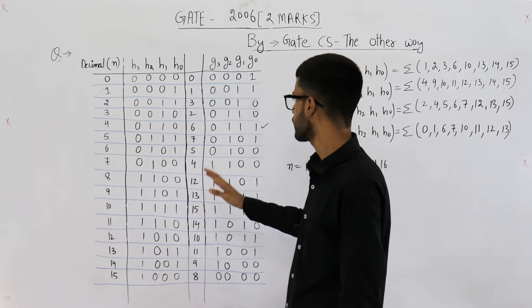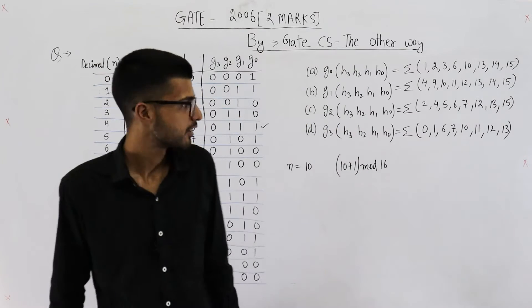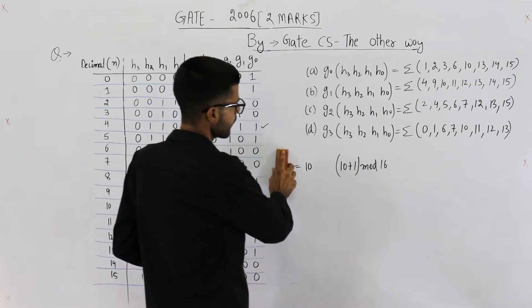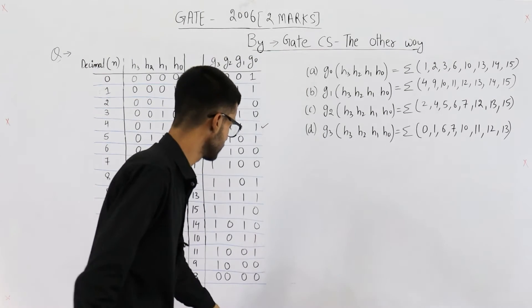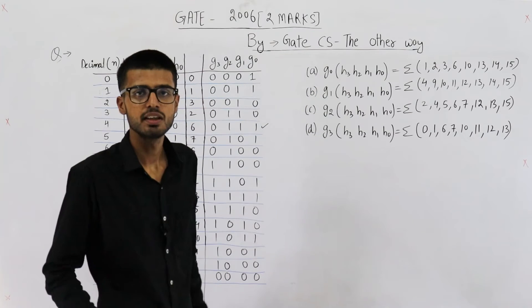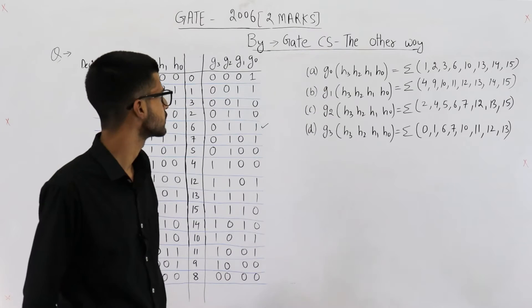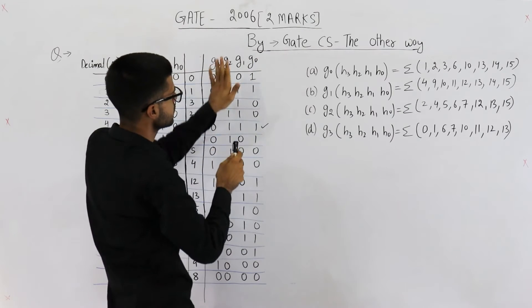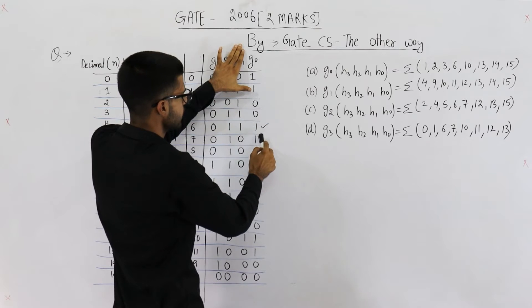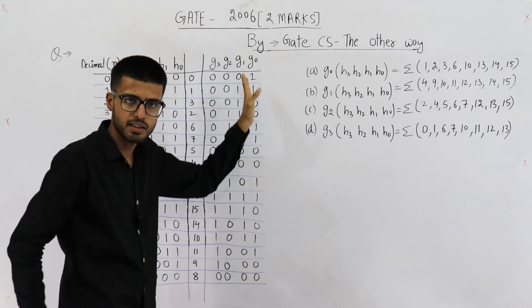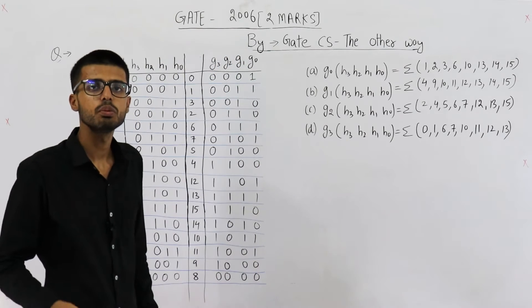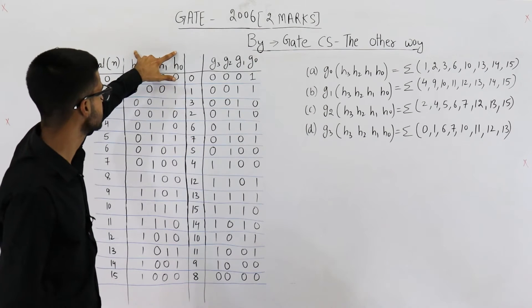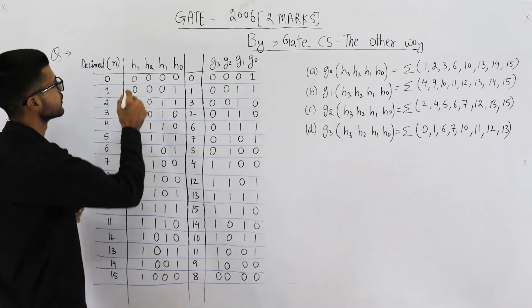Now you know what are h and g. Now let me explain the question. What are they asking? See, they are saying, you consider g0, g1, g2, g3. You consider all of them to be functions. For example, this g0, just concentrate on g0, it is 1, 1, 0, 0, 1 and so on. You consider all of these numbers to be outputs of a function g0, who is dependent or which is dependent on these four variables.